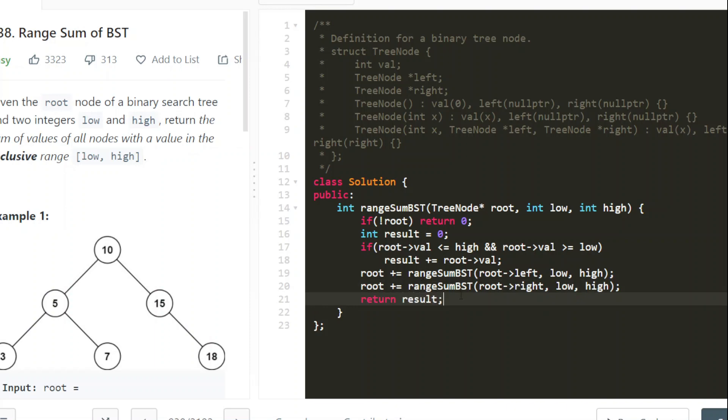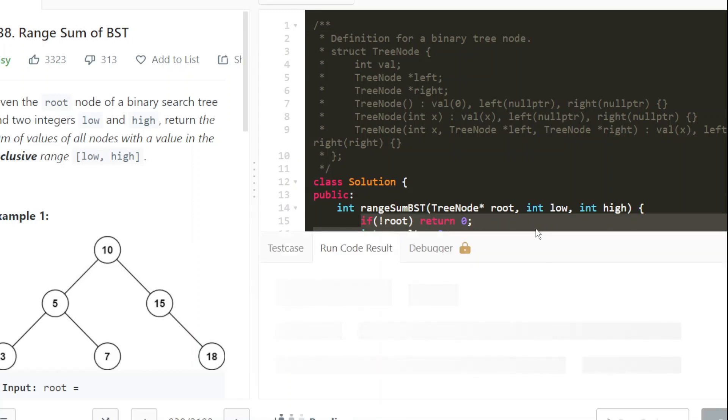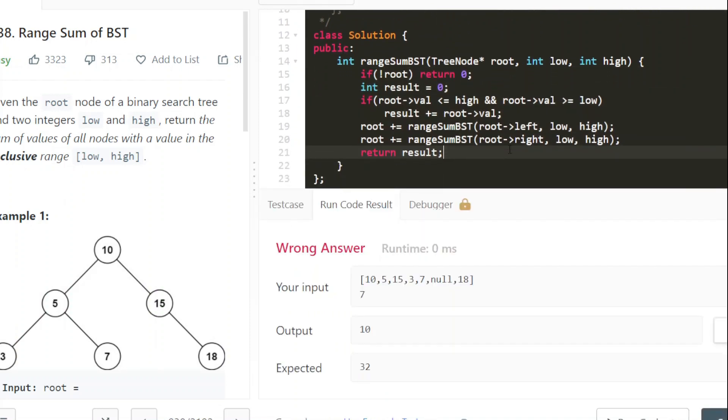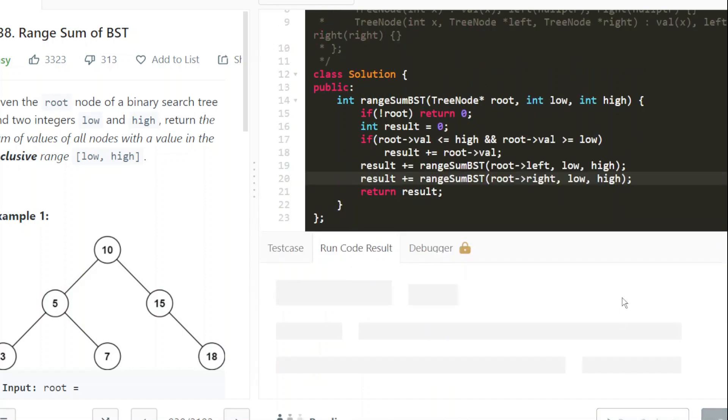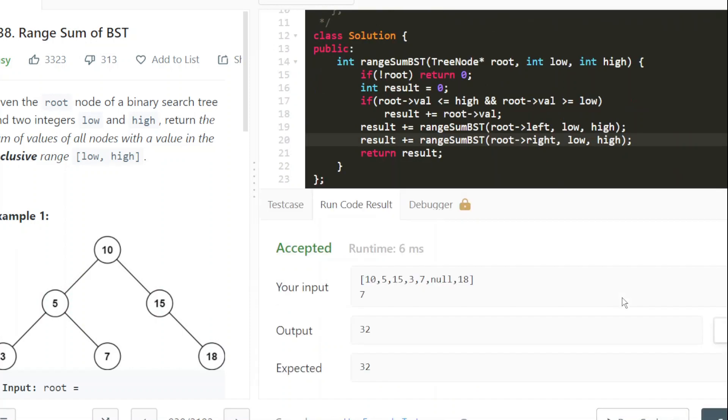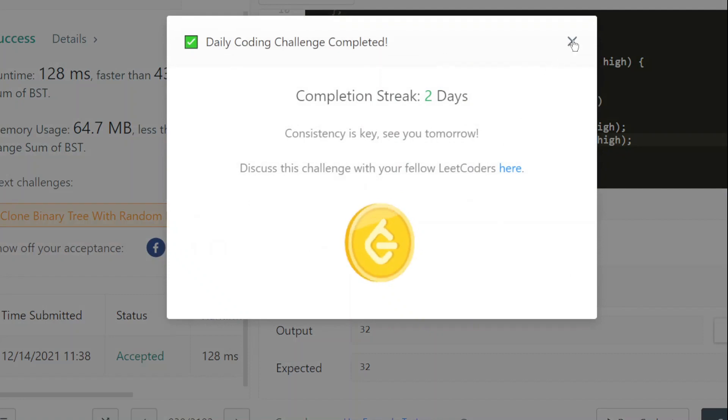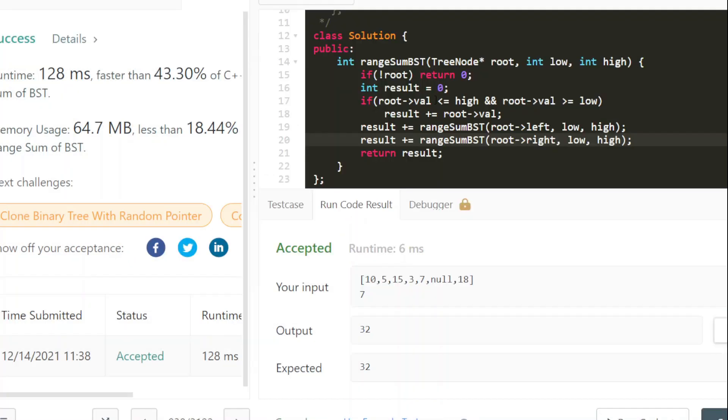And we return result. This is same as pre-order traversal. The answer is wrong, let's see. Sorry not root, result. It should be result, root is the node pointer. And our solution is accepted. I hope you understood it.